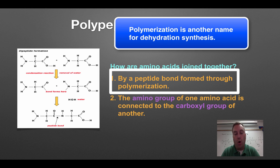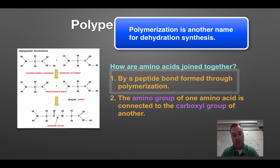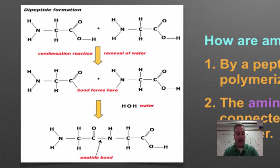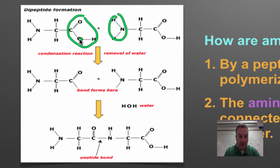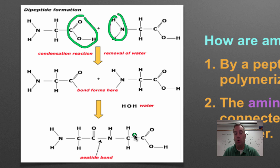The bond that holds two amino acids together in a protein is called a peptide bond, and this bond is made through dehydration synthesis. You're going to use the carboxyl group from one amino acid and the amino group from another, take out the OH from one and the H from another, and form this peptide bond. This is what we call a dipeptide because it has two amino acids hooked together. Three or more amino acids hooked together is called a polypeptide.